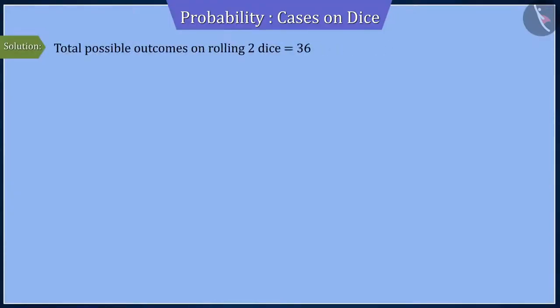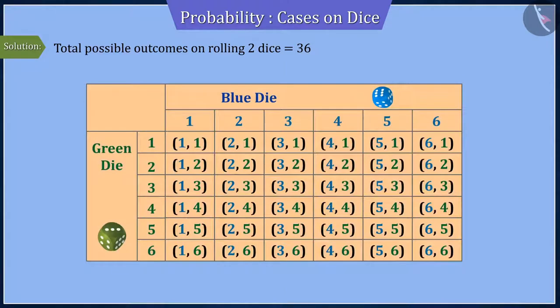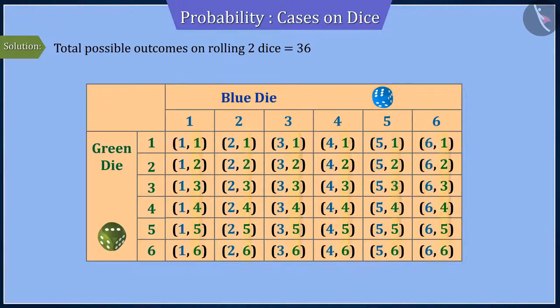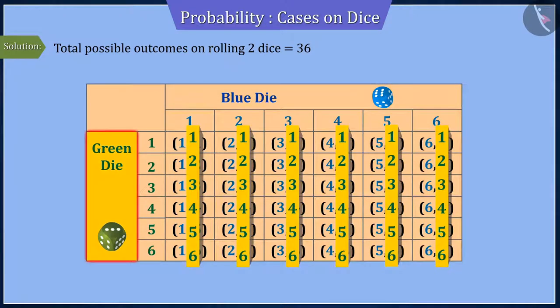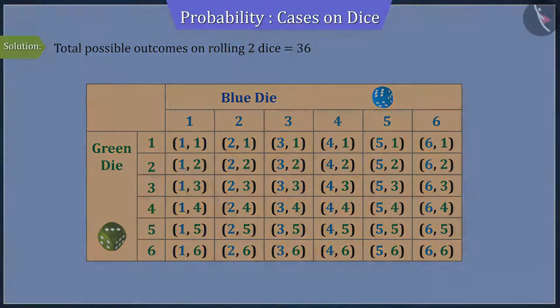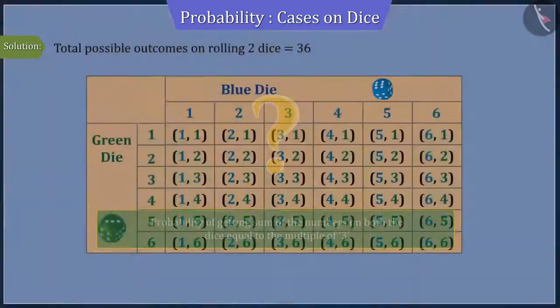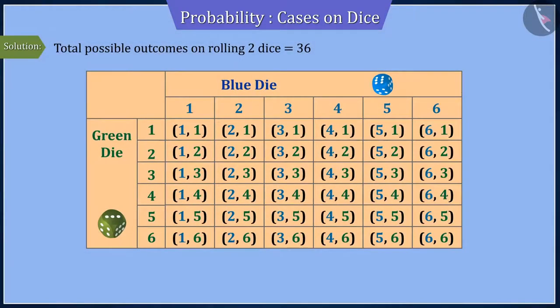We know that rolling two dice yield a total of 36 outcomes, where the first number of each ordered pair is the blue die number and the second number is the green die number. Since we have to find the probability of getting sum of the numbers on both the dice equal to the multiple of 3, we select those ordered pairs whose sum of numbers is a multiple of 3.